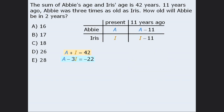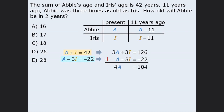At this point, we take these two equations and solve the system. We multiply the top equation by three, leave the bottom equation as is, and add the two equations. The I's cancel out, leaving 4A equals 104. Dividing both sides by 4, we get A equals 26. This tells us that Abby's present age is 26. Since the question asks for Abby's age two years in the future, the correct answer is E, which is 28.